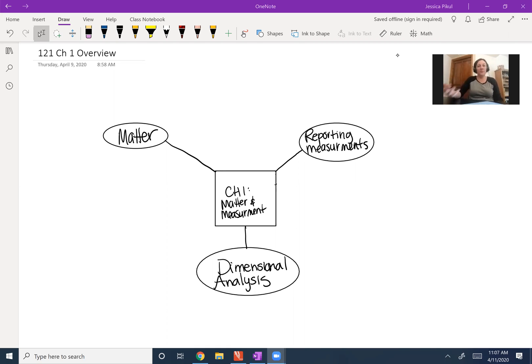In this video, I want to overview chapter one. It's about matter and measurement and there's three main areas that we study when we're looking at chapter one content. We are looking at dimensional analysis, we're looking at reporting measurements, and defining matter. So these are kind of our three main categories.